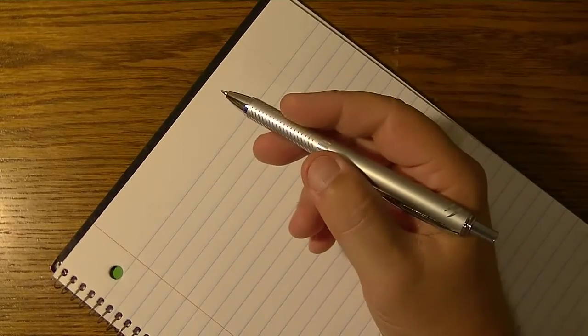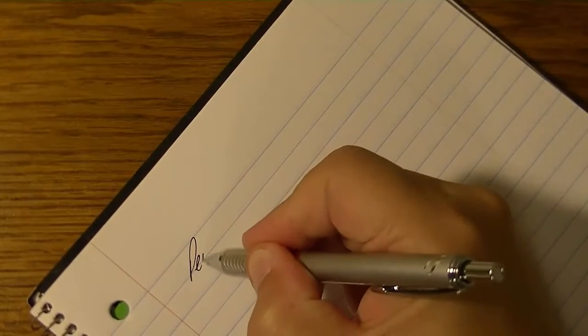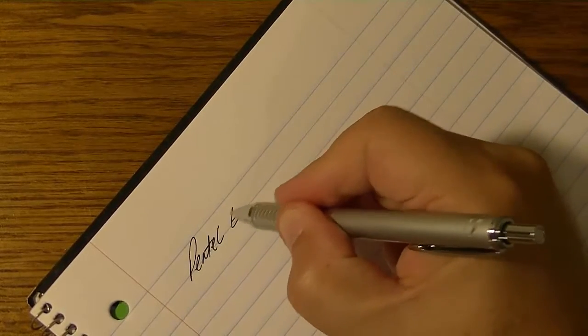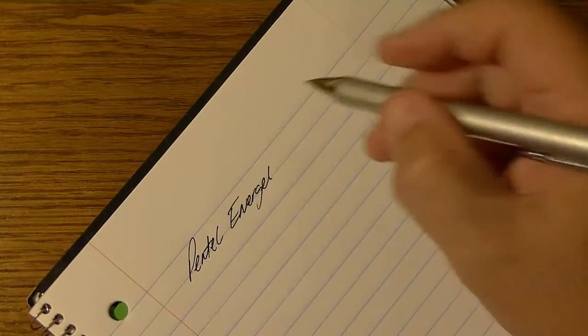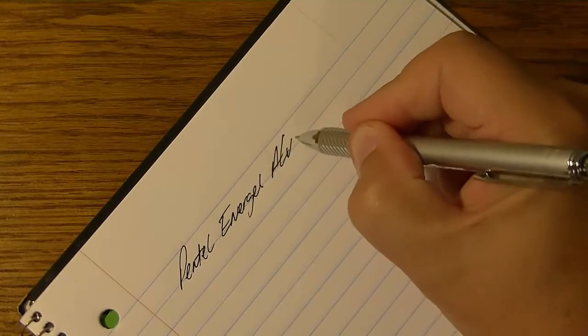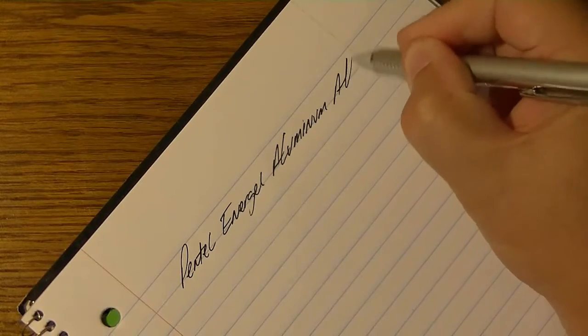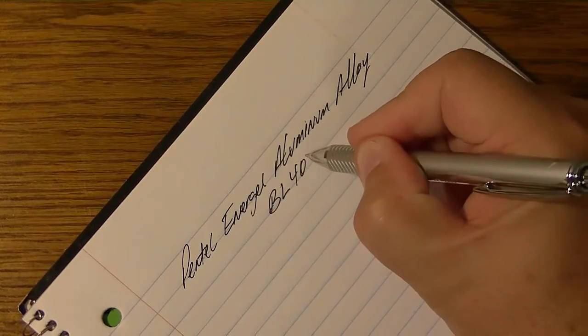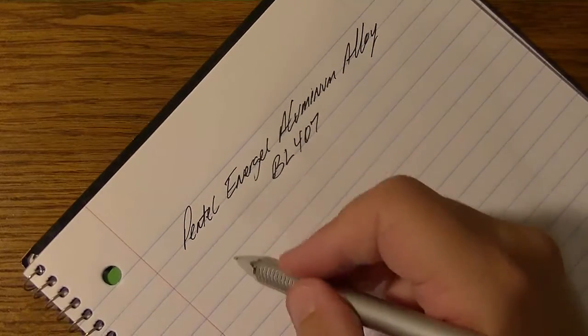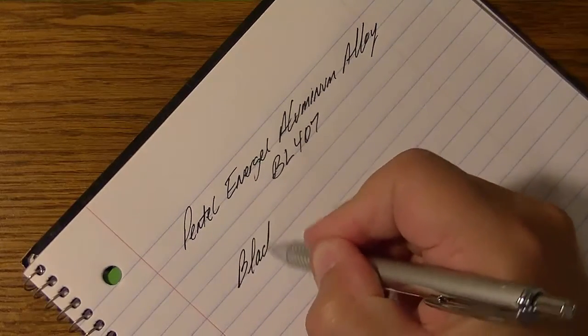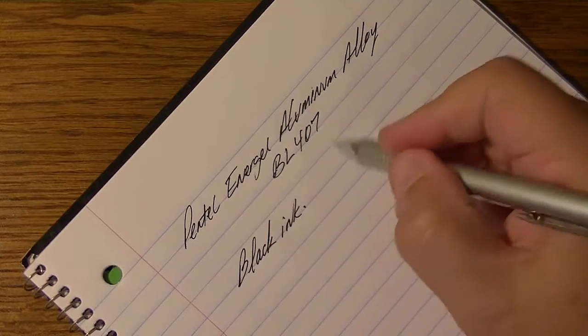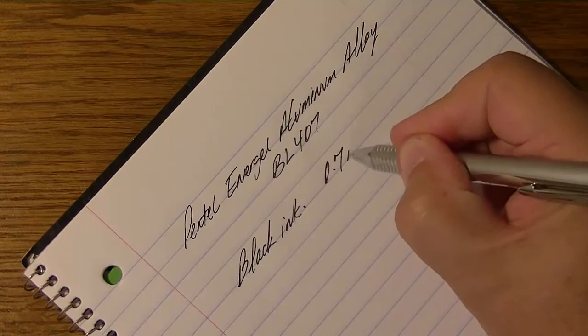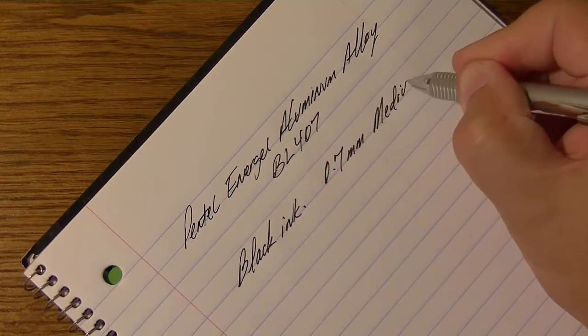So let's see here. I'll go ahead and zoom in as I usually do. Here we go, this is the Pentel Energel, it's an aluminum alloy BL407. You can see that the ink is black. This happens to be a 0.7 millimeter medium tip.